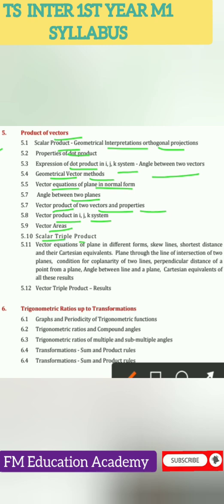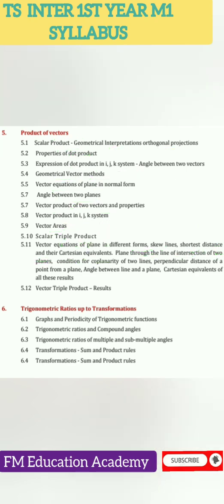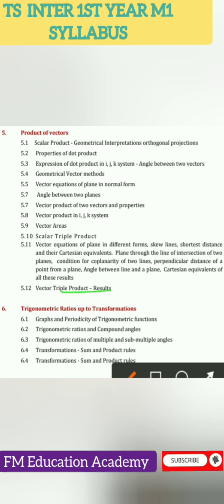Continuing Chapter 5: vector areas, scalar triple product, vector equations of plane in different forms, skew lines, shortest distance and their Cartesian equivalence, plane through line of intersection of two planes, condition for coplanarity of two lines, perpendicular distance of a point from a plane, angle between line and plane, Cartesian equivalence of all these results, and vector triple product and results.